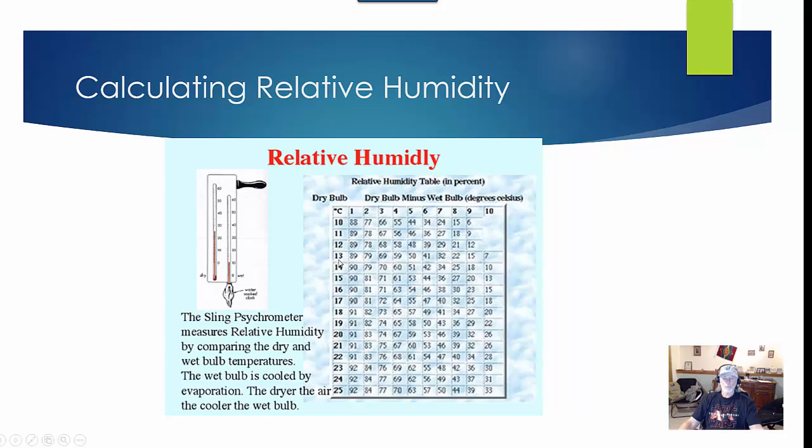So if we had a dry bulb reading of 13 and a difference between dry bulb and wet bulb of 4, we'd have a relative humidity of 59%. Go back and review those two exercises we did on relative humidity.